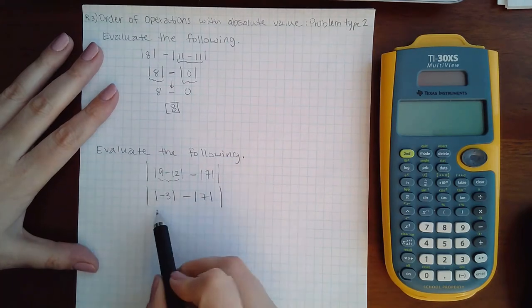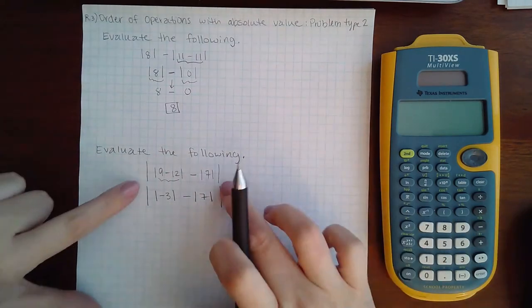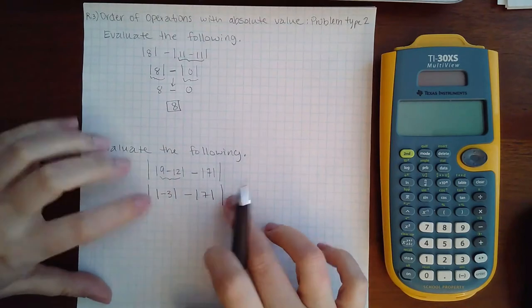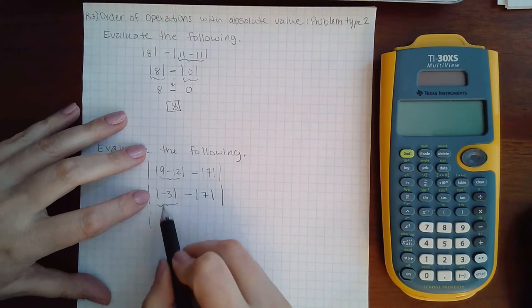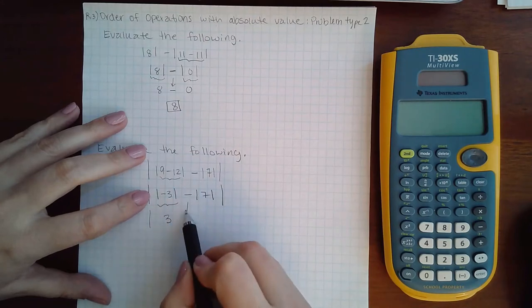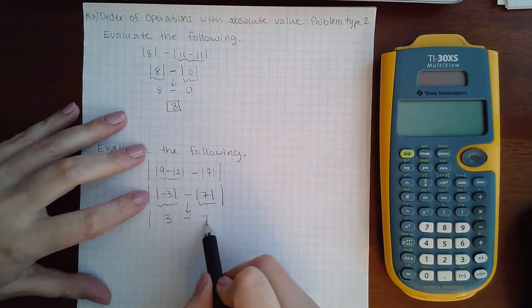I do need to evaluate, but I do need to work within this group. So within this group I need to evaluate the absolute value of negative 3, which is 3, and the absolute value of 7, which is 7.